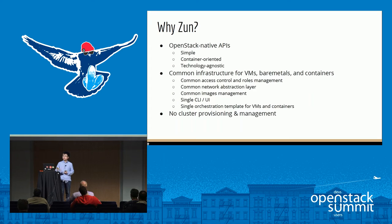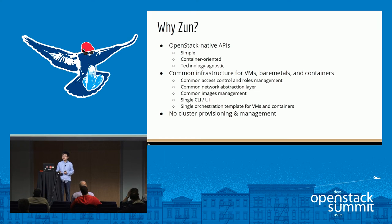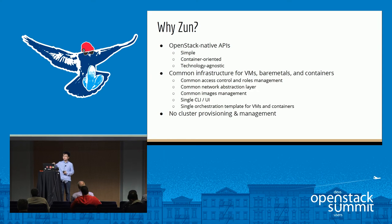Here is a summary of why we created the Zun project. Zun provides simple, container-aligned APIs that are independent of specific container technologies. It provides common infrastructure for VMs, bare metals, and containers. In Zun, users don't need to manage container hosts or clusters. If they want a container, they don't need to provision a host first — they just request a container and it runs in a pool of hosts set up by the cloud provider. This is different from Magnum, where you first need to create a cluster, wait for it to boot up, and then run containers on it. In Zun, this is simplified.